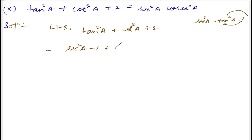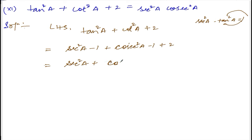For cot, similarly, cosec square a minus 1, plus 2. Now we have sec square a plus cosec square a minus 1 minus 1, which is minus 2, plus 2. The minus 2 and plus 2 cancel.